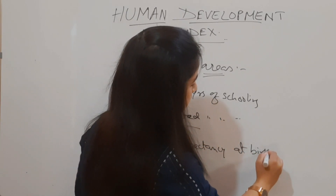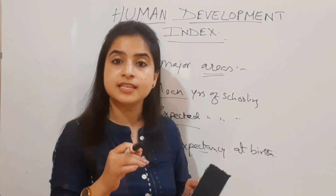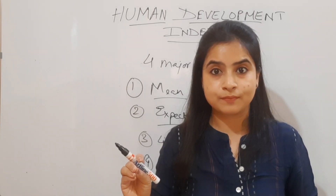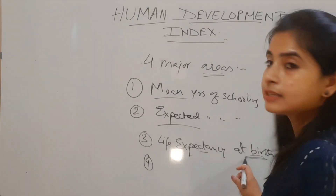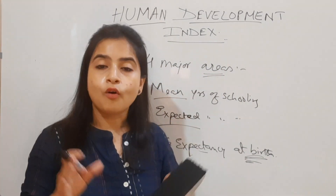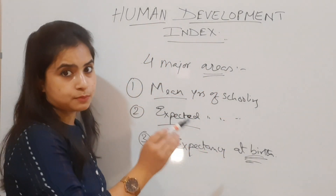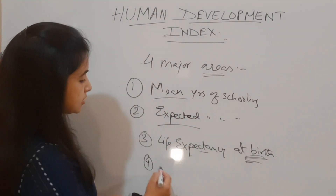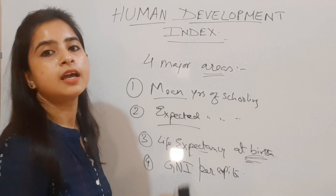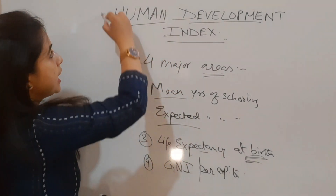Life expectancy at birth is included because it indicates the living conditions of a country. At birth, this is the most critical time — whether an infant survives depends on the condition of the family and the economy of that particular country. The fourth and final area is GNI per capita — Gross National Income per capita. These are the four broad areas on which HDI focuses.